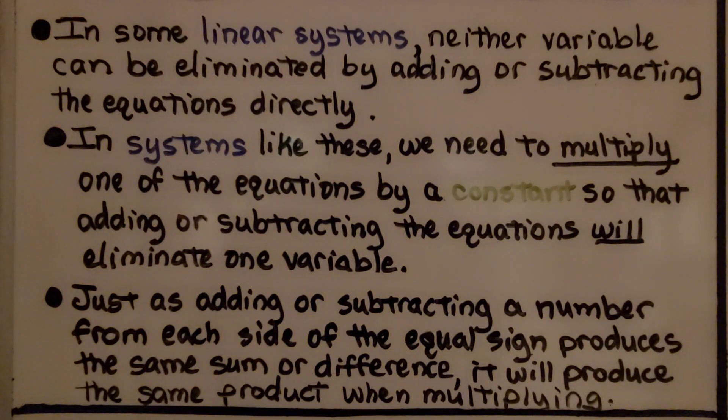In some linear systems, neither variable can be eliminated by adding or subtracting the equations directly. In systems like these, we need to multiply one of the equations by a constant so that adding or subtracting the equations will eliminate one variable. Just as adding or subtracting a number from each side of the equal sign produces the same sum or difference, it will produce the same product when multiplying.